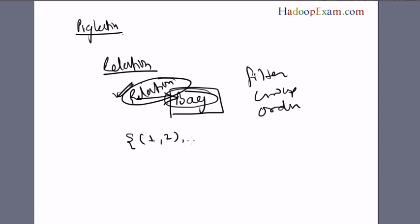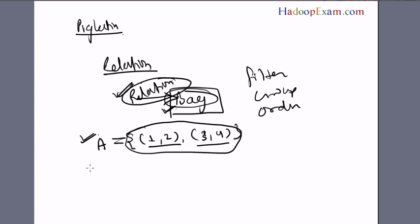You cannot directly work with the bag. You cannot create a relation kind of thing. Suppose you have this kind of tuple one, two, three, four - this is one bag because it has two tuples. If you try to assign into A equals something, then it will fail because directly Pig doesn't work on bags. It requires a relation. The best way to create a relation is to load the data from the file, then Pig can work on this data.